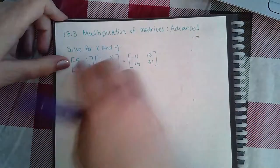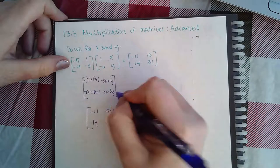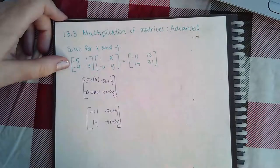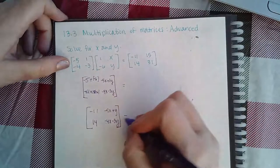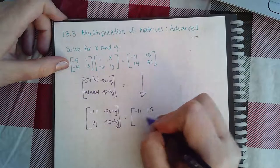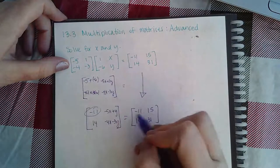And then second row times second column is negative 4x minus 3y. And we know that this is supposed to equal this matrix here, so we can already see that the first entries in the first column they already match.